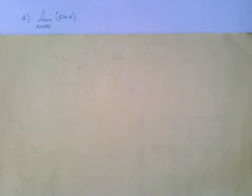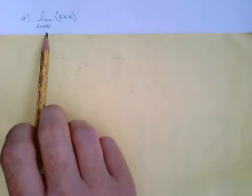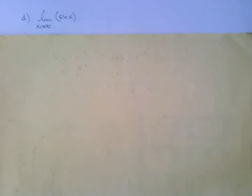Picking up where we left off, part d: we're trying to find the limit of sine of x as x approaches infinity. As the value of x gets bigger and bigger and we plug it into sine, we need to ask: is it headed towards one y-value, tending towards infinity, or negative infinity?